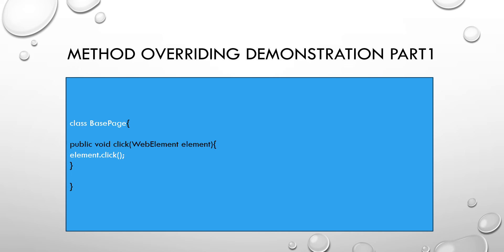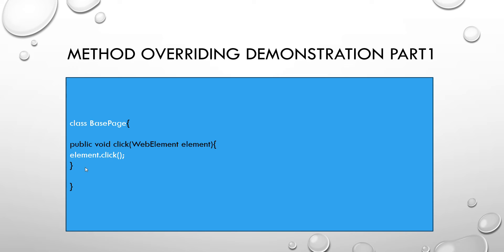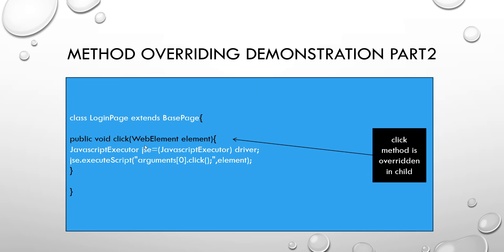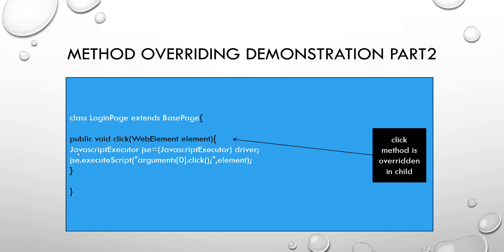In the base page I have written a general `click` method applicable to all pages. Now the Login page inherits the base page. If for some reason the click functionality is not working on the Login page, we can simply override that method. We copy-paste the method and modify the definition - for example, trying it with a JavaScript executor. This is known as method overriding in the test automation framework.